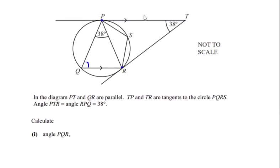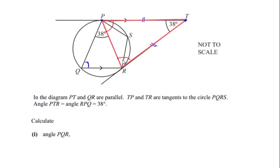Using this theorem on our example: T is an external point, and TP and TR are the two tangents drawn from it. This means the length of TP equals the length of TR, making triangle TPR an isosceles triangle. Since two sides are equal, the two base angles are also equal — angle TPR equals angle TRP. Let us call each of these angles x.